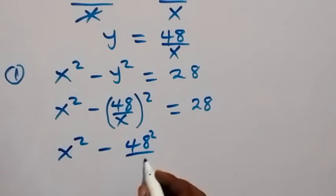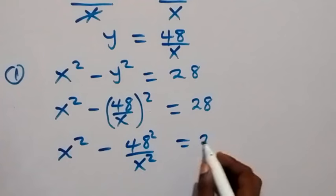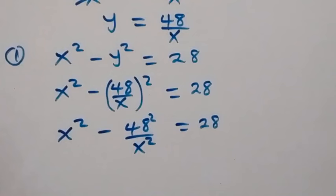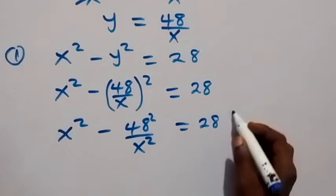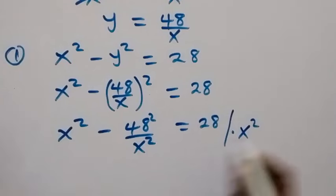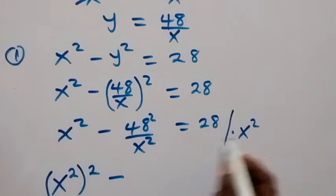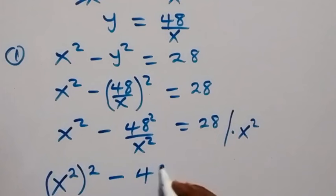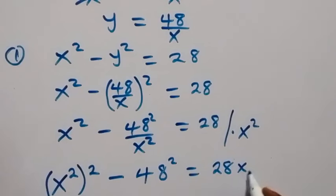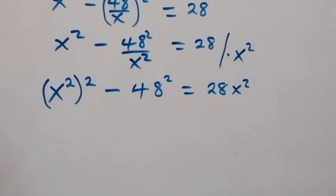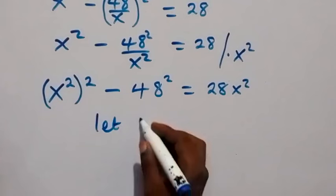Squaring gives us x squared minus 48 squared over x squared equals 28. Now we multiply through by x squared, so x squared times x squared gives x to the fourth, and x squared cancels with the denominator, leaving 48 squared. This gives us x to the fourth minus 48 squared equals 28 times x squared.